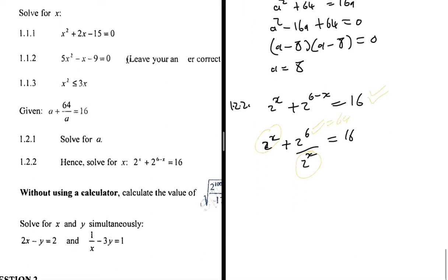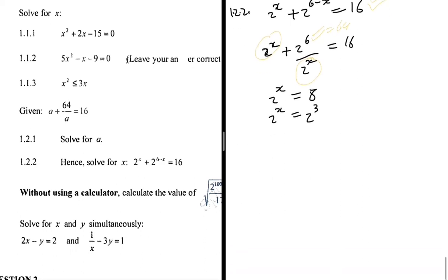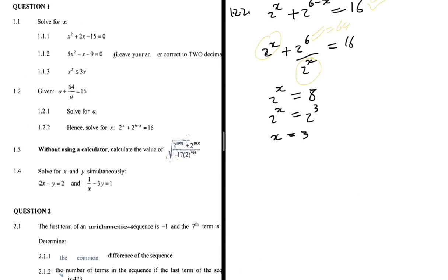Since a = 2^x and a = 8, we have 2^x = 8. Writing 8 as a power of 2 gives 2^x = 2^3, so we can equate exponents: x = 3. Problem 1.2.2 is solved.